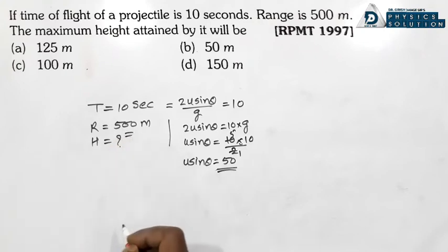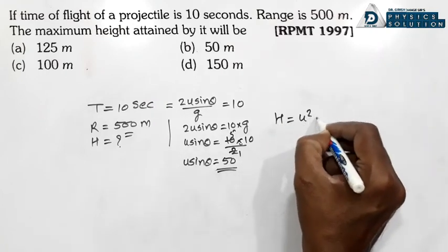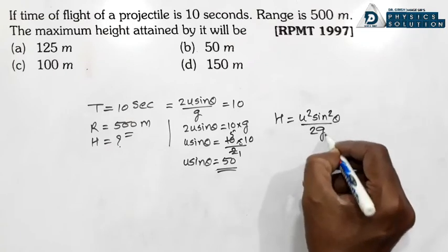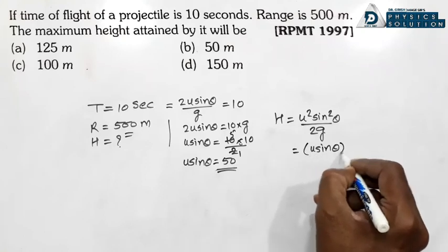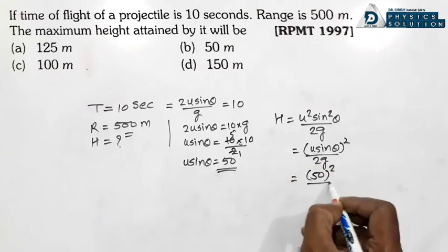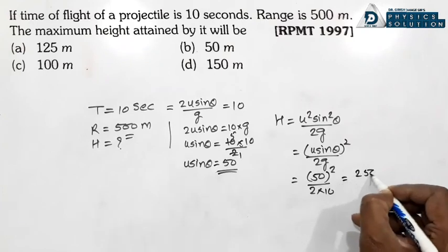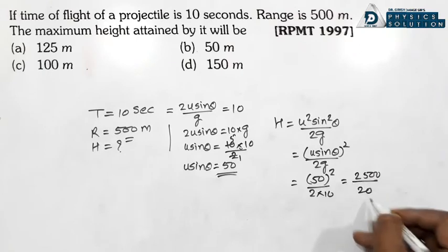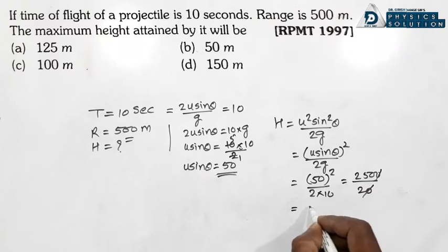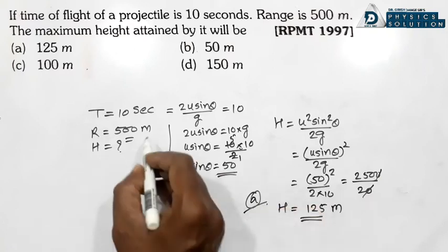H = (u sinθ)² / 2g = (50)² / (2×10) = 2500 / 20 = 125 metre. Maximum height = 125 metre. Option A.